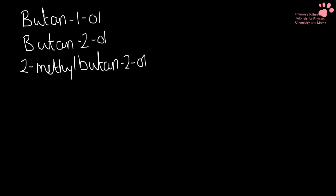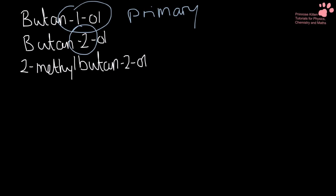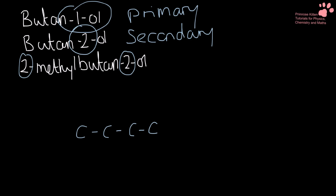You also need to be able to work out from the name whether something is primary, secondary or tertiary. So if something is a 1, it is going to be a primary, because the functional group is right on the end. If we have the alcohol group not on the end but nothing else appears attached, it is going to be secondary. And you'll notice here that in 2-methyl-butan-2-ol, the two numbers being the same tells us we have a tertiary alcohol.